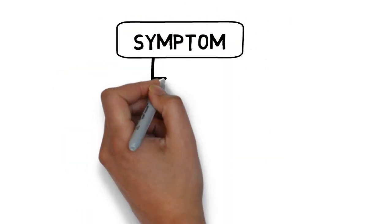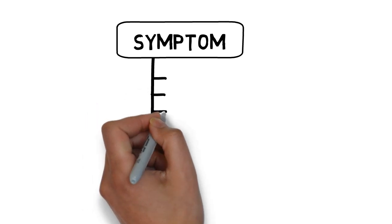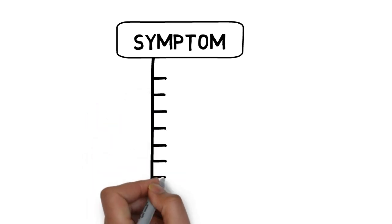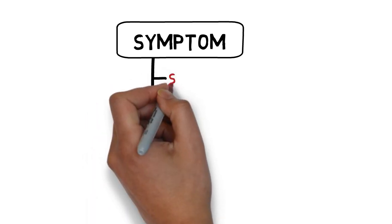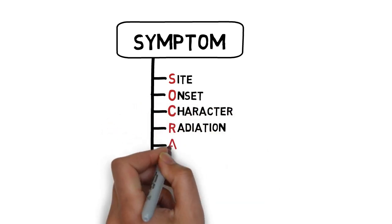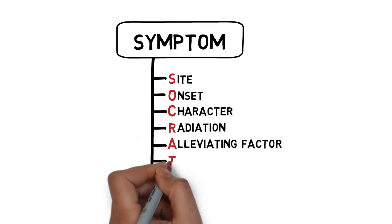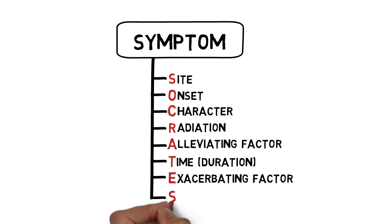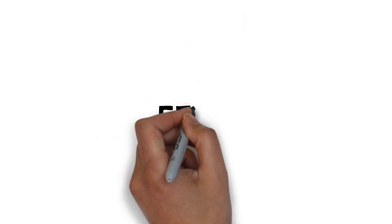Each symptom warrants a different approach. In the previous video, we described and differentiated the types of chest pain in terms of its site, onset, character, radiation, alleviating factor, timing, exacerbating factors and severity — the SOCRATES mnemonic. I'm sure you are very familiar with this.